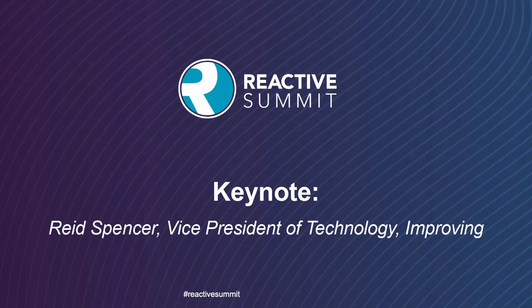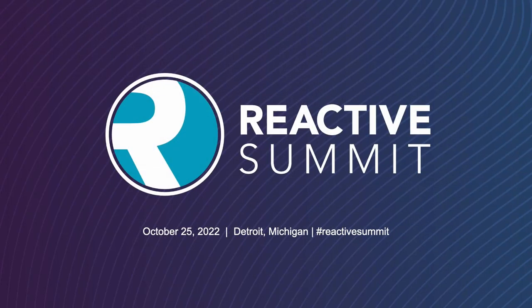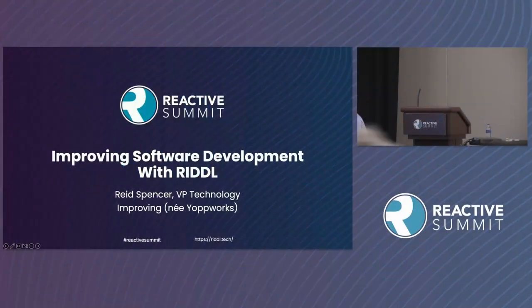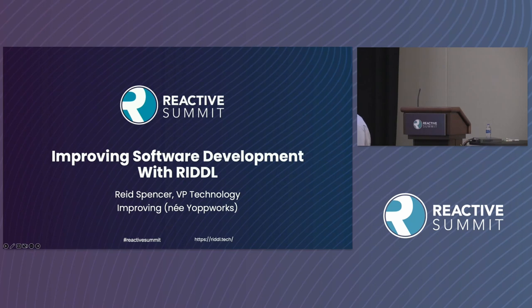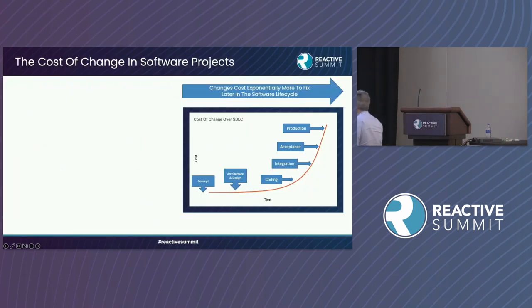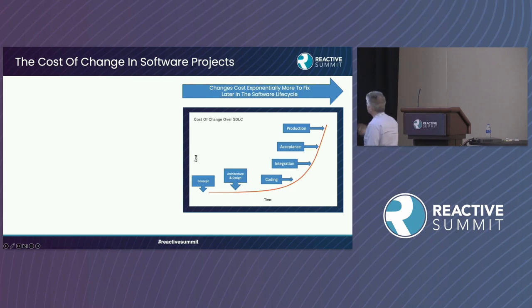I'm going to talk about a side project I've been working on for the last three years — it's called RIDDLE, which is an acronym. I started thinking about this when Kent Beck in 2004 wrote about how changes cost exponentially more to fix later in the software development life cycle.